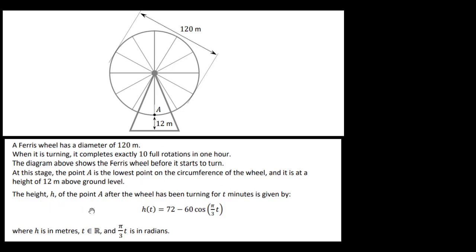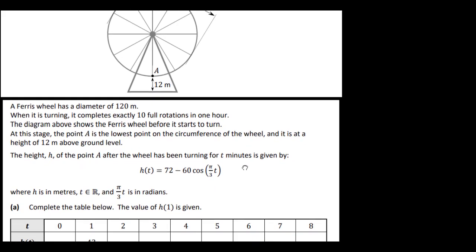The height h of point A after the wheel has been turning for t minutes is given by h equals 72 minus 60 cos(π/3 · t). Here h is in meters, t is real, and π/3 · t is in radians. So we're dealing in radians — make sure if you're using your calculator it's in radian mode.